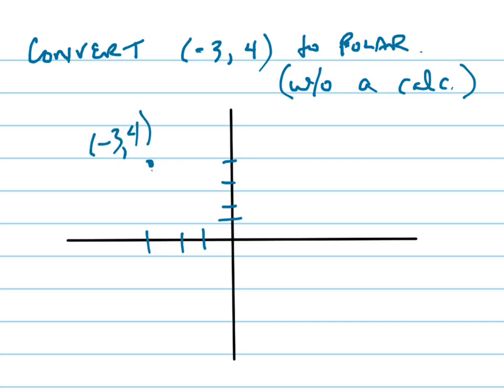Now that's relatively, the r is easy to find because r, if this is 3, 4, if that's -3 and that's 4, then this is 5 right here. So the r is 5.